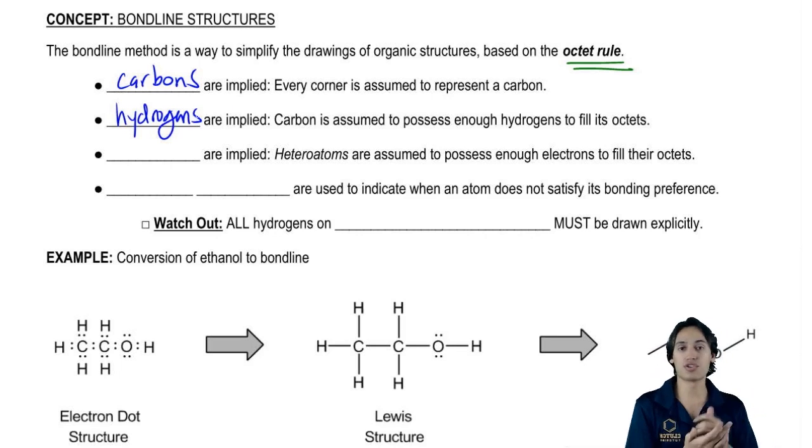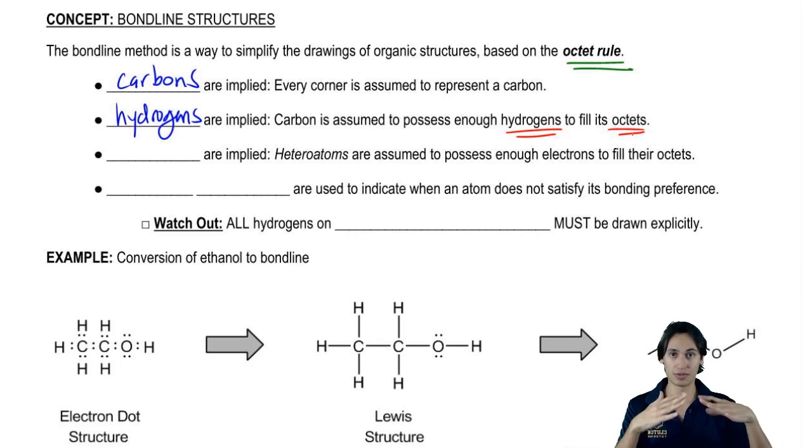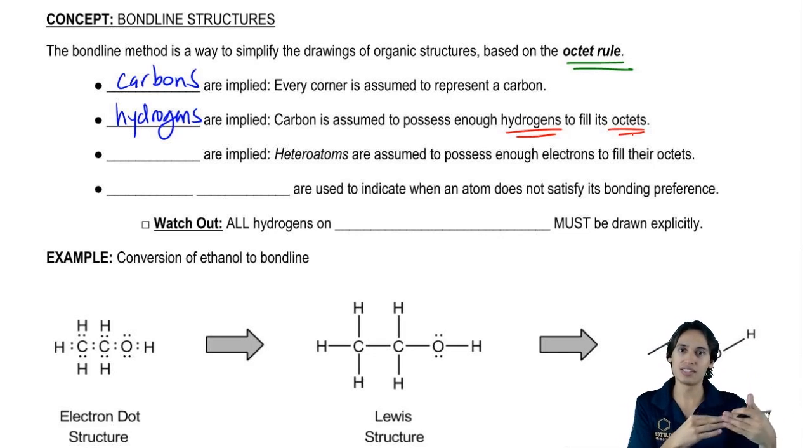If we're not drawing hydrogens, how do we know how many there are? Well, all we have to do is use the octet rule. We said that every carbon is assumed to possess enough hydrogens to fill its octet. So for example, if a carbon has two bonds to other carbons and we don't show any hydrogens, we have to add bonds there in order for that carbon to fulfill its octet.